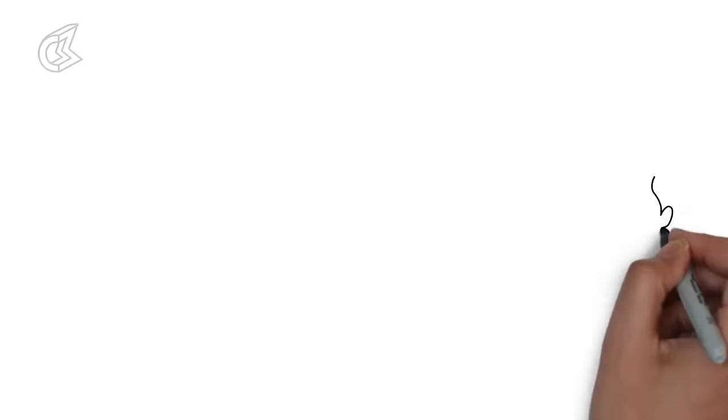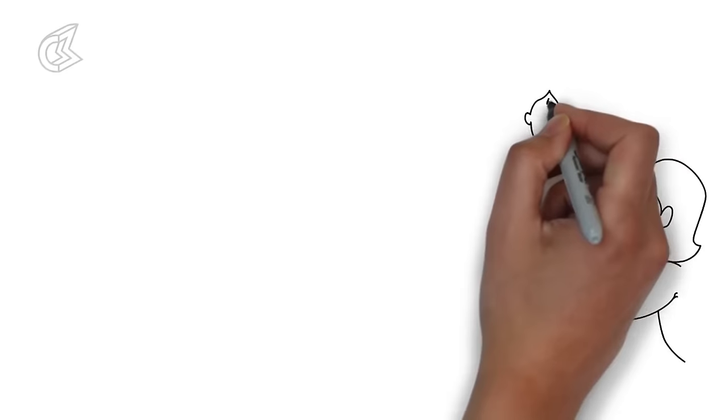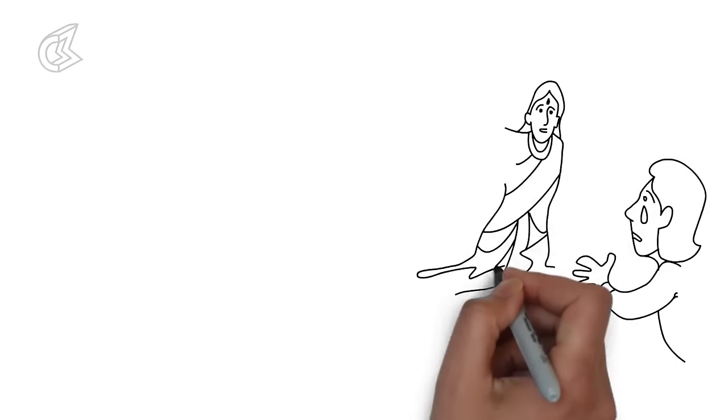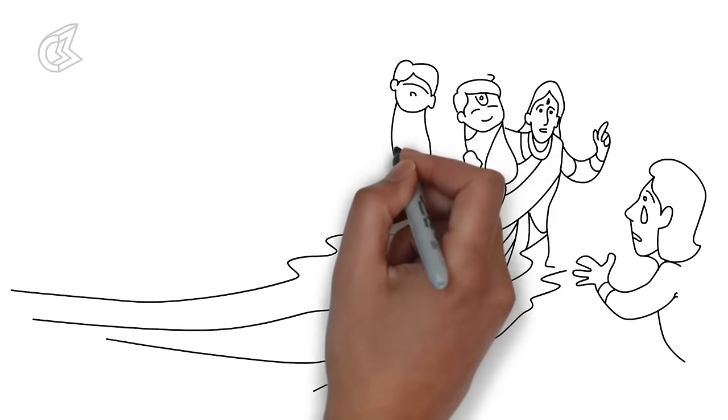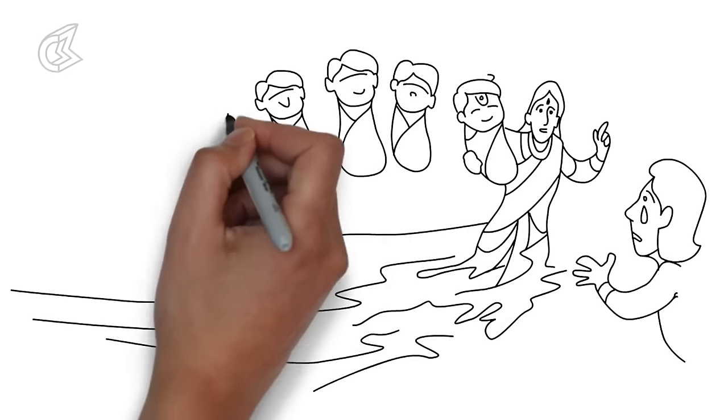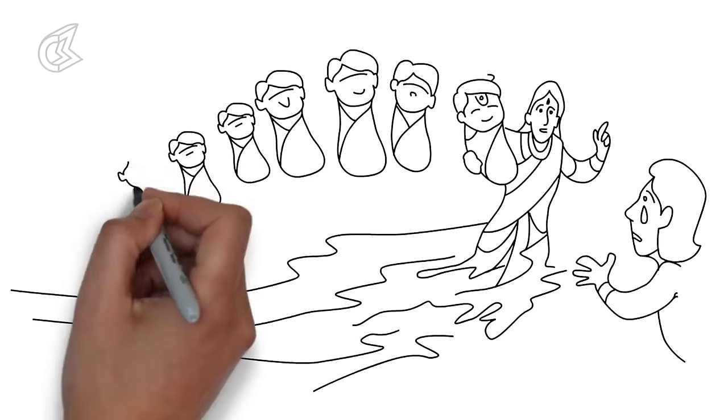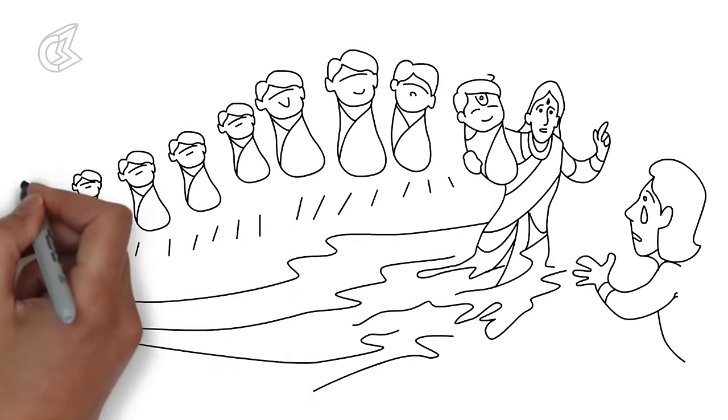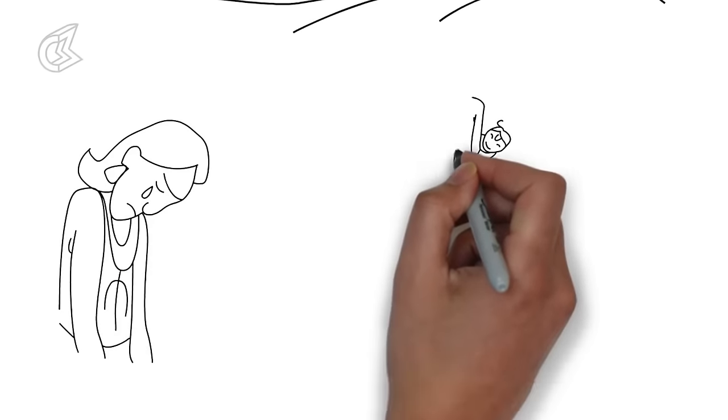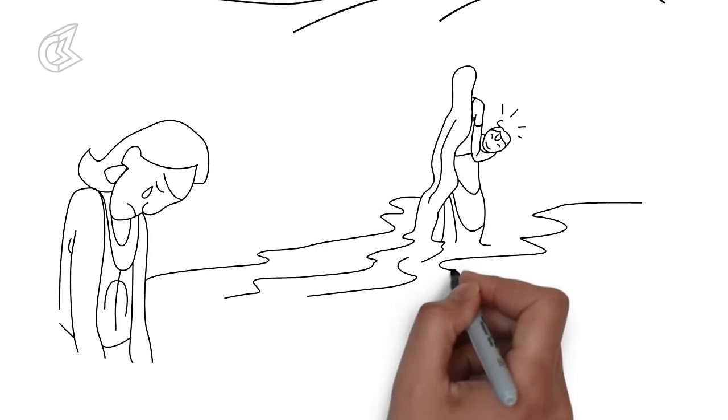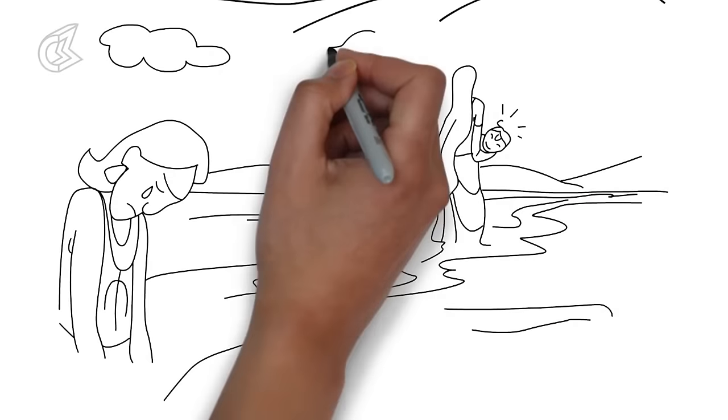When he asked his wife why she had killed their children, he was told about the eight Vasus who had been cursed to live mortal lives for a crime committed long ago. Ganga had agreed to give birth to the eight celestial spirits and free them from mortality as soon as they came into this world. After telling Shantanu the truth, Ganga left him and she took with her his one remaining son.